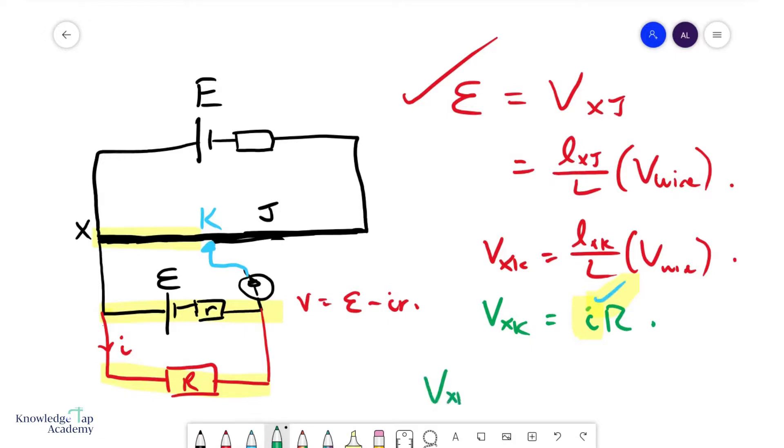Finally, we use VXK again, this time equal to E minus IR. We know what this is, we know what this is, we know what this is. And therefore, you can find your internal resistance.